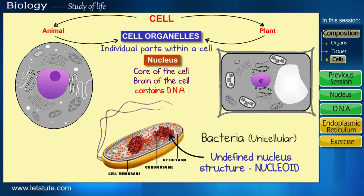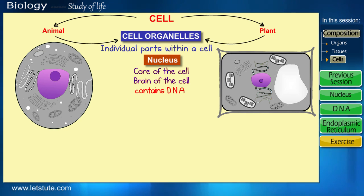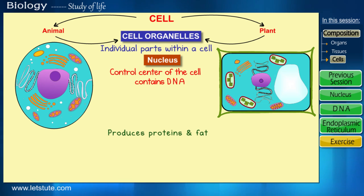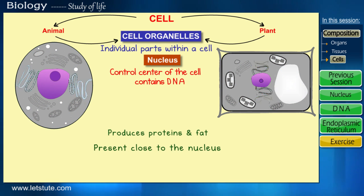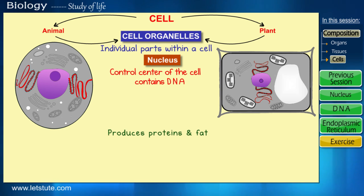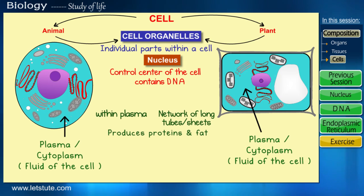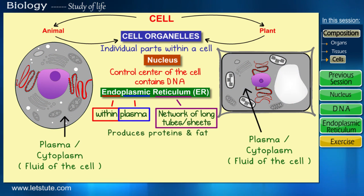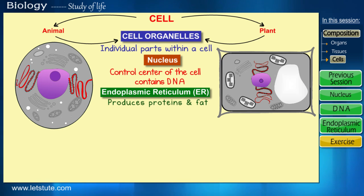Moving on from the nucleus, both the nucleus and the cell require proteins and fat for their functioning. There is an organelle which produces the required proteins and fat, and it is present very close to the nucleus. It is so close that it emerges from the outer membrane of the nucleus and extends to form a large network of sheets and tubes present within the plasma, or the fluid, of the cell. Because of its location and structure, this organelle is named the endoplasmic reticulum.